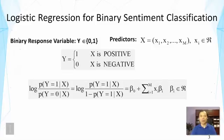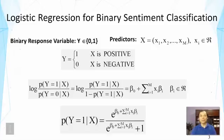This is a standard two-category categorization problem where we can apply logistic regression. In logistic regression, we assume the log-odds of the probability that y equals 1 is a linear function of the features. This allows us to write the probability of y equals 1 given x as a logistic function, relating this probability to the feature values, where beta represents our parameters.